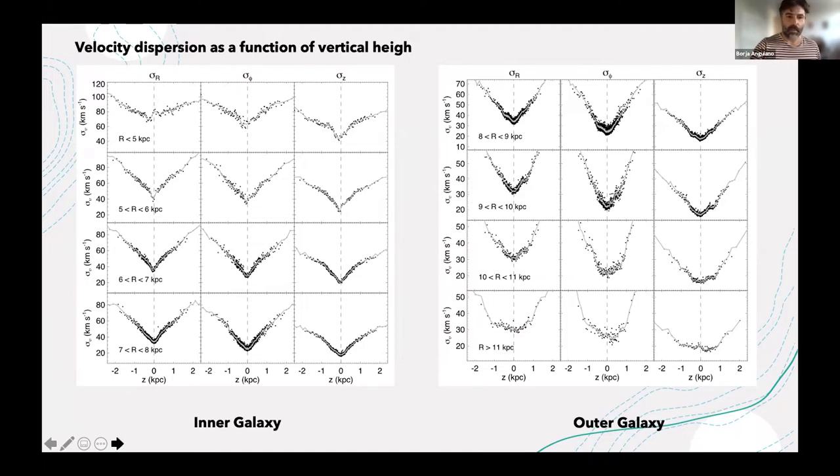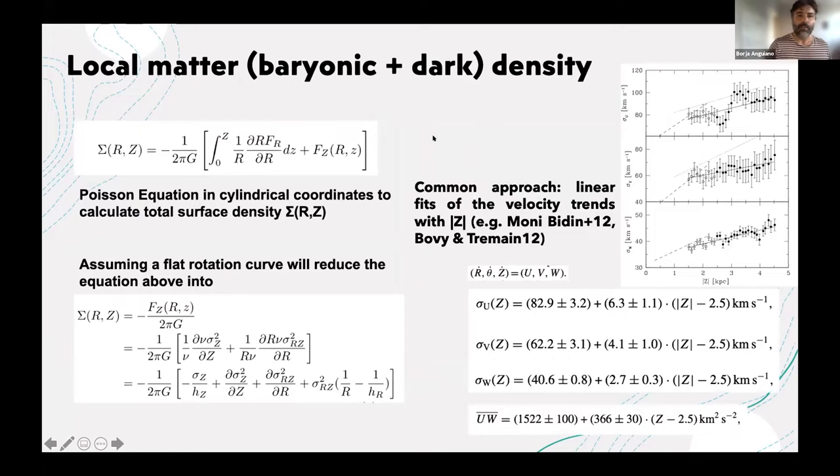Let me show you how traditionally we've been trying to treat this problem, how we derive the local matter density. We have the Poisson equation in cylindrical coordinates to calculate the total surface density.